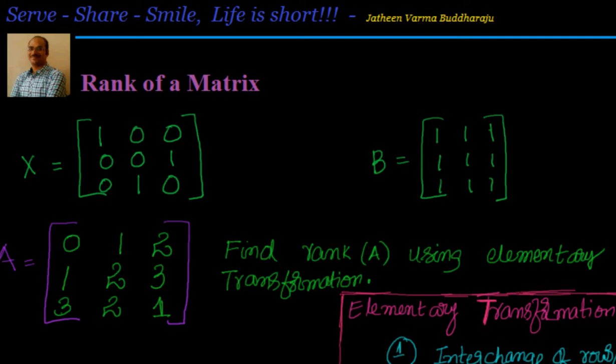Hi friends, welcome back. In the last session we went through the concept of rank of a matrix. We also saw that for a 3x3 matrix the rank can be 3, 2, or 1 depending upon whether the determinant of the matrix is not equal to 0, in which case the rank is 3.